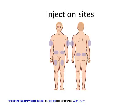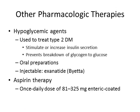Other pharmacological therapies for Type 2 include agents that stimulate or increase insulin secretion and those that break down glycogen to glucose — often oral preparations. There is also one injectable agent, Byetta. Patients are often on aspirin therapy related to atherosclerosis. There are multiple oral hypoglycemic agents available that you'll see in clinical.